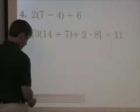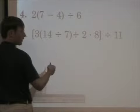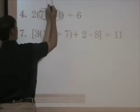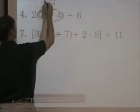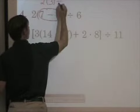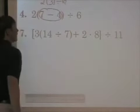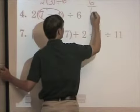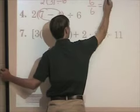Number four here is very simple. First, I look for parentheses — are there any parentheses? Yes. So all I do is simplify the parentheses: seven minus four is three. Now I rewrite the problem: two times three divided by six. At this point, what do I do next? Multiplication. Is there any multiplication? Yes. Two times three is six. And six divided by six is one.